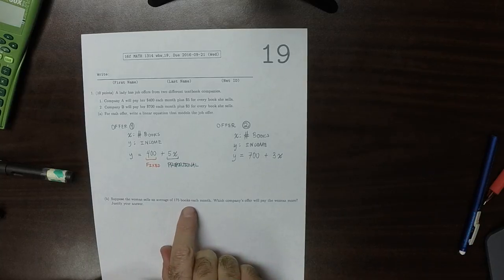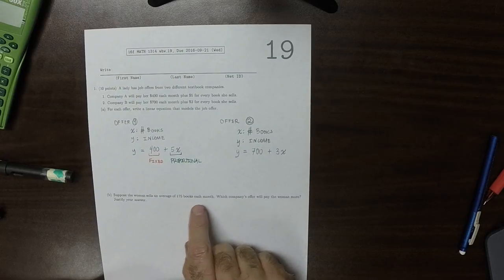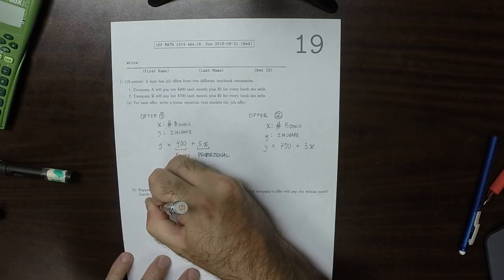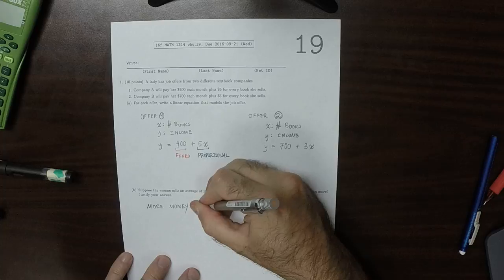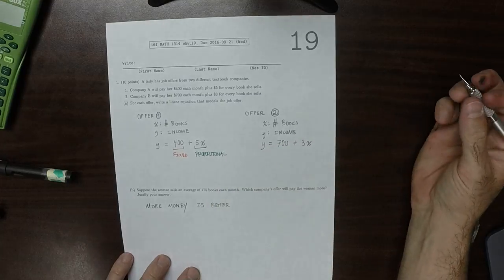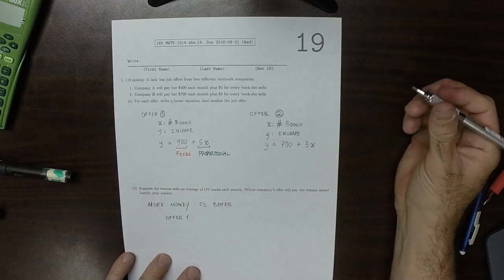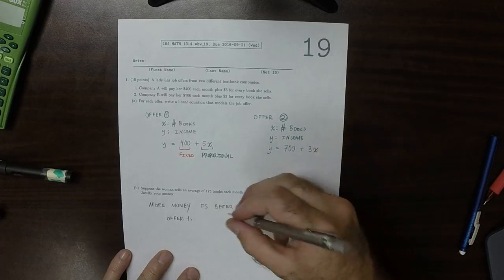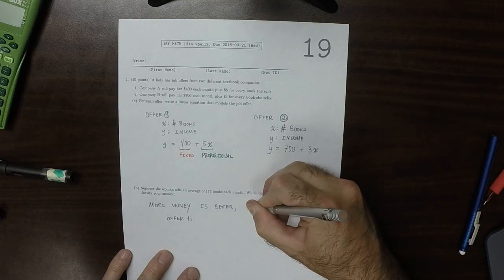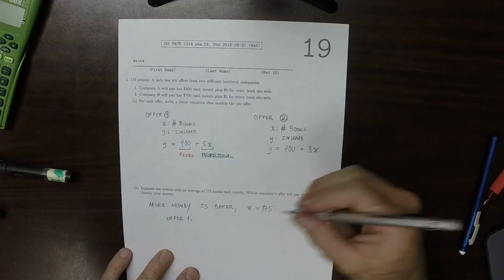So now suppose the woman in question sells an average of 175 books per month, so which one is better? In the first place, this is of course assuming that more money is better. So in the case of offer 1, since we're using x to denote the number of books in both offers, the question is asking if x is 175, which y is higher?